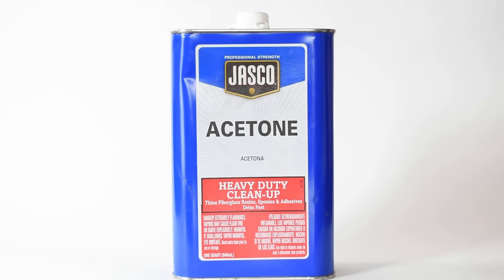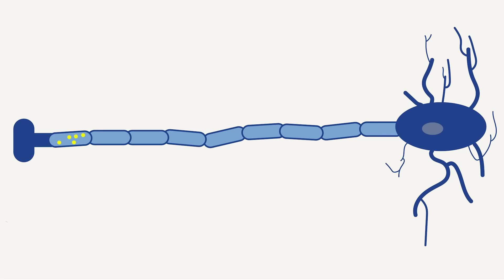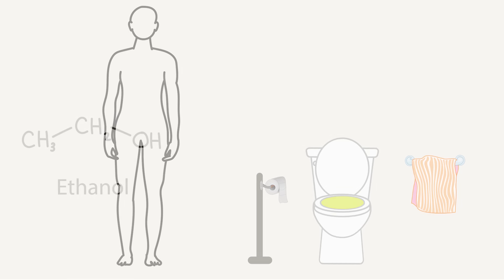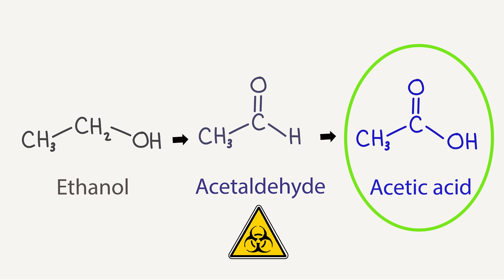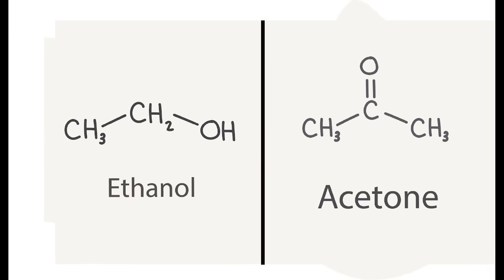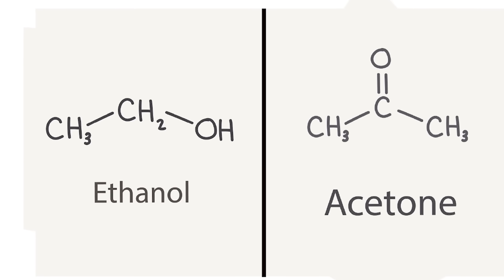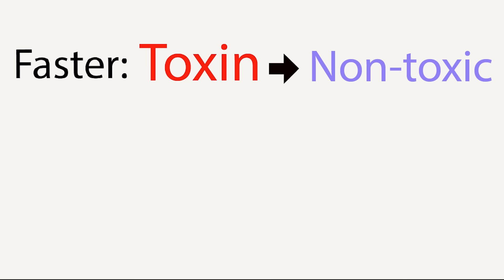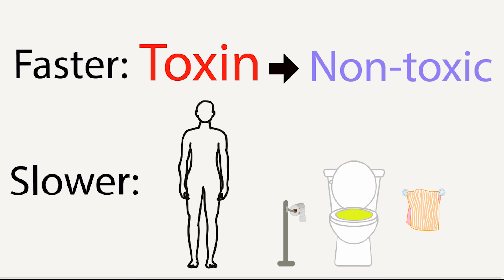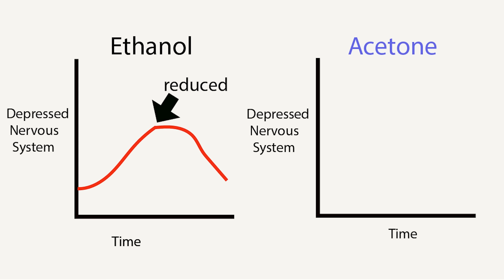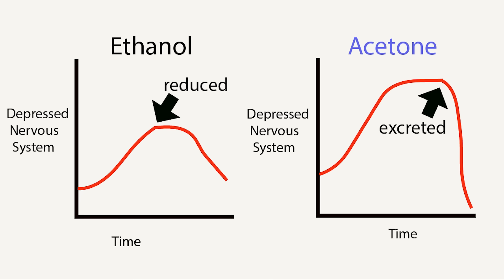But wait, why is acetone more poisonous than ethanol? As the acetone sits in the body, it depresses the nervous system until it's excreted in the urine. In contrast, ethanol is first reduced to something safer, and then later excreted, which lessens the depressant effects while it's in the body. This is why acetone is a stronger depressant than ethanol — it takes less time to reduce the toxin than it does to excrete it. While ethanol is in the body, it gets reduced to a less toxic form, so over time the nervous system is less depressed. However, the whole time acetone stays in the body, it keeps depressing the nervous system until it's excreted.